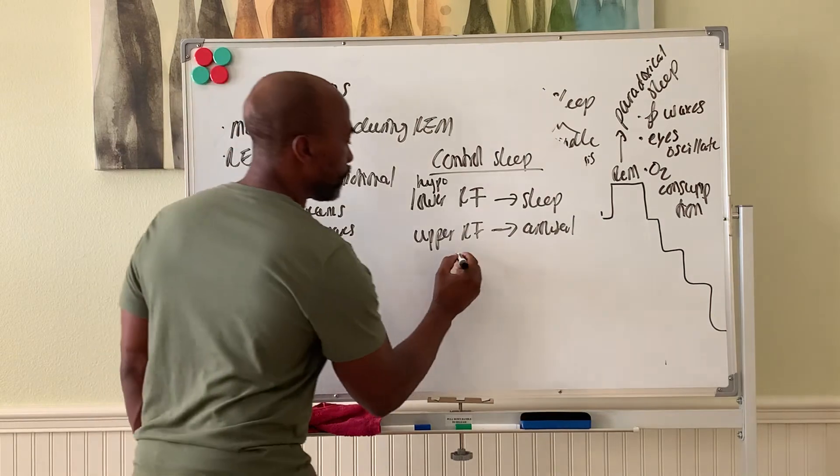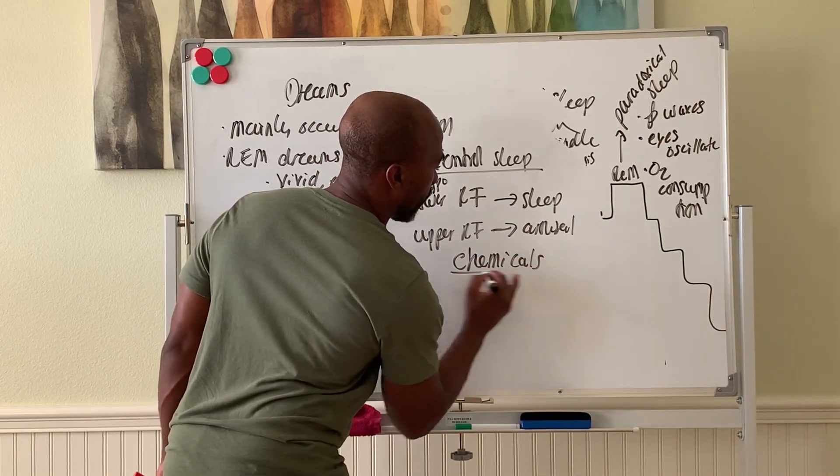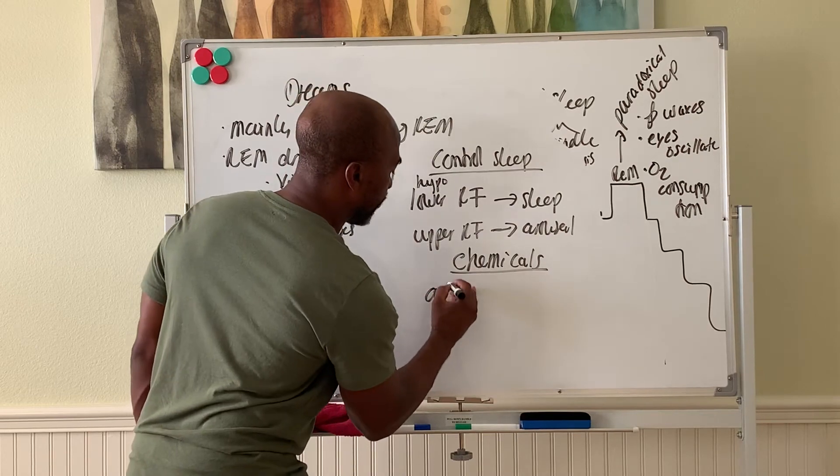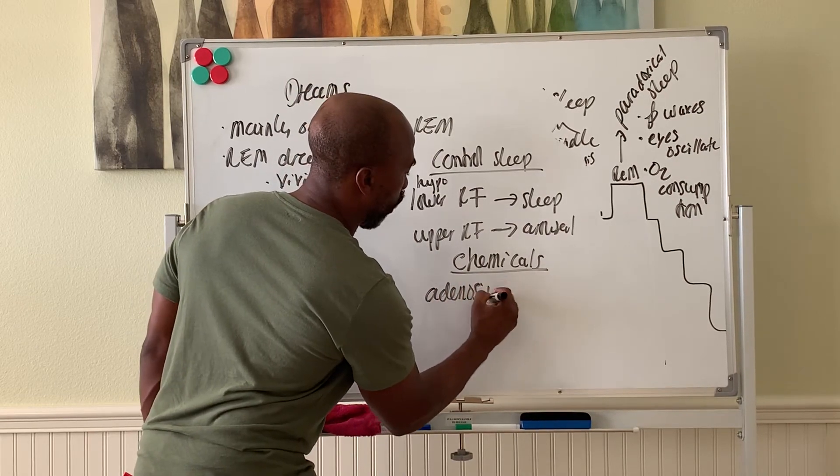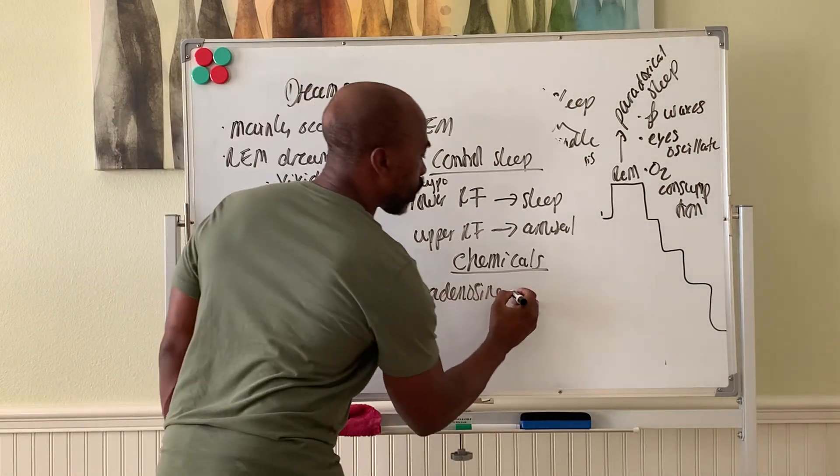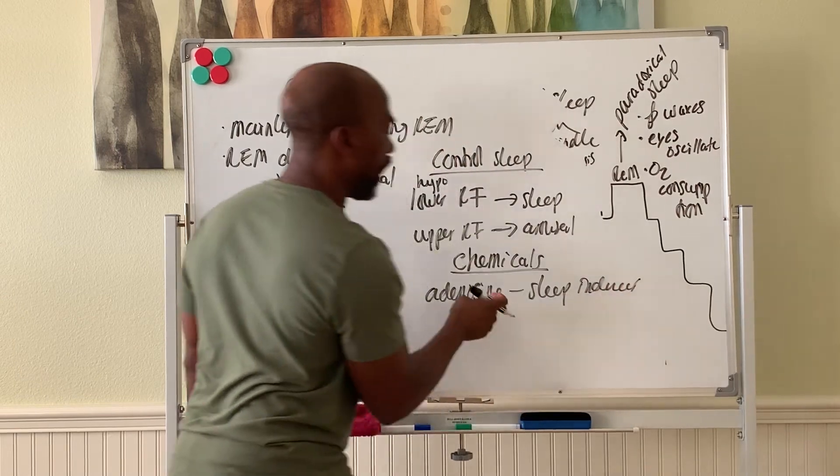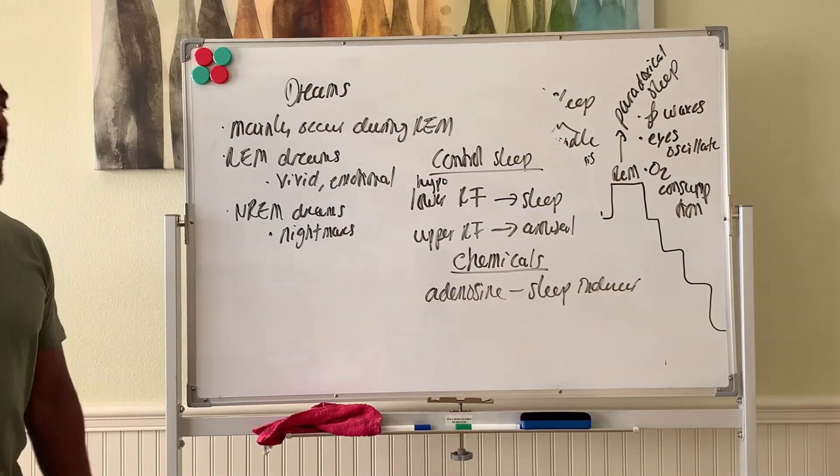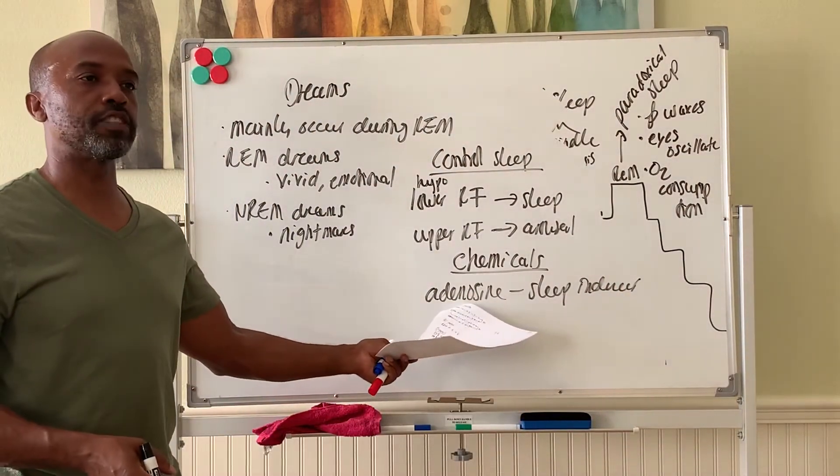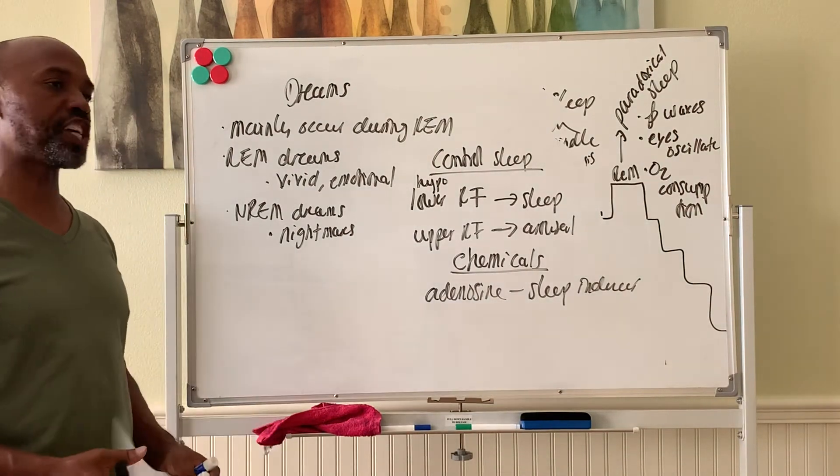As far as chemicals go for sleep, the chemical called adenosine, which is part of the RNA nucleotide, causes sleep. It's a sleep inducer. The more that you have, the more sleepy you feel. Caffeine blocks this from working. That's how caffeine kind of perks you up, by blocking the action of adenosine.